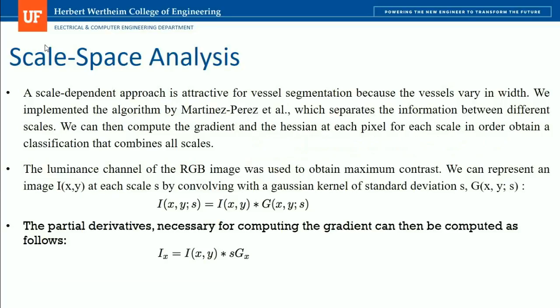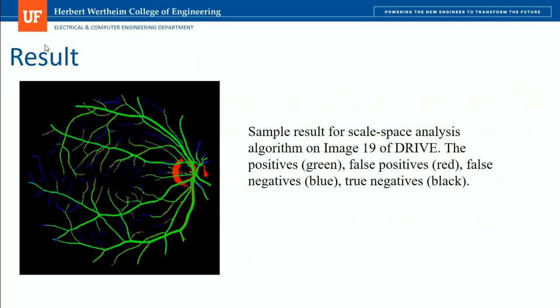The last algorithm is scale-space analysis, attractive for vessel segmentation because vessels vary in width. Initially developed by Martinus Pérez, it separates information between different scales, then computes the gradient and Hessian at each pixel for each scale to obtain a combined classification across all scales. The luminance channel of the RGB image is used for maximum contrast. An image I(x,y) at each scale S is convolved with a Gaussian kernel of standard deviation S to represent a particular scale, and partial derivatives are computed for the gradient. After implementing this in MATLAB, sample results from the DRIVE dataset distinguish false and true positives and negatives for comparison with other algorithms.